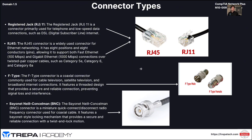Moving on to copper connectors: RJ11 is rarely seen anymore — it was used for DSL and traditional hardwired telephone lines, not VoIP. RJ45 is what we're used to seeing; Cat5 through Cat6A all use RJ45 connector types. The F-type connector is used for coaxial cable — still copper but not typical in data centers.